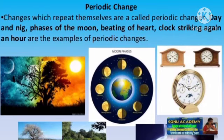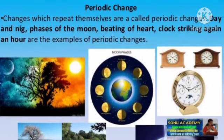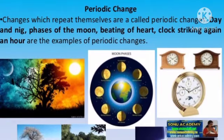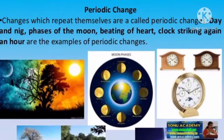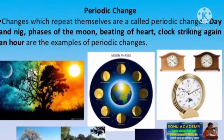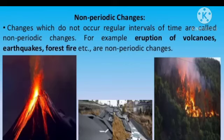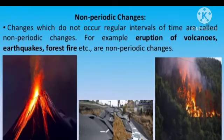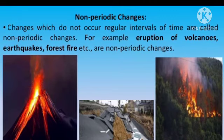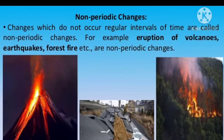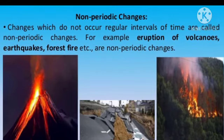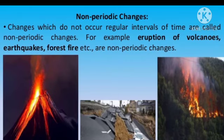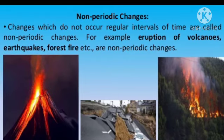Periodic changes: changes which repeat themselves are called periodic changes. Examples: day and night, phases of the moon, beating of the heart, striking of a clock. Non-periodic changes: changes which do not occur at regular intervals of time are called non-periodic changes. For example: eruption of volcanoes, earthquakes, forest fire, etc.